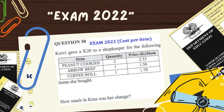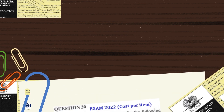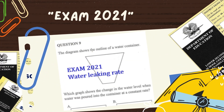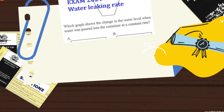Compared to question 22 and 30, those questions were based on cost per item. On the contrary, questions in 2021 were on rates but on different approaches. Question nine was about water leaking rate and question 10 was about exchange rate.